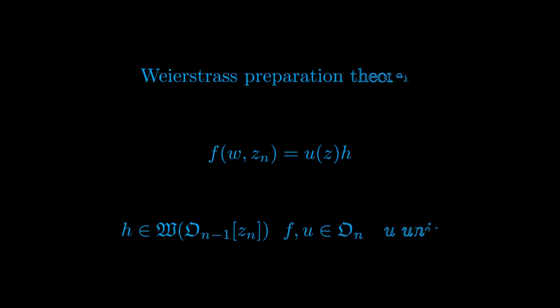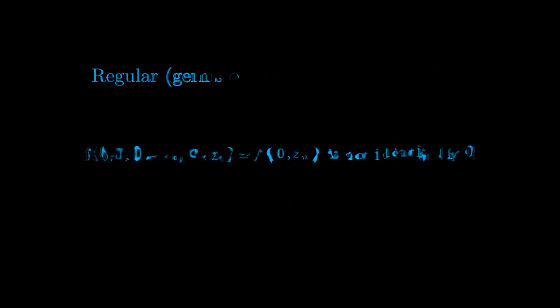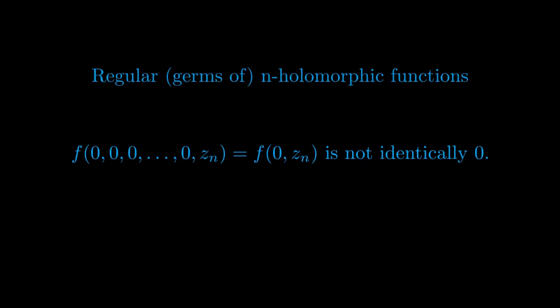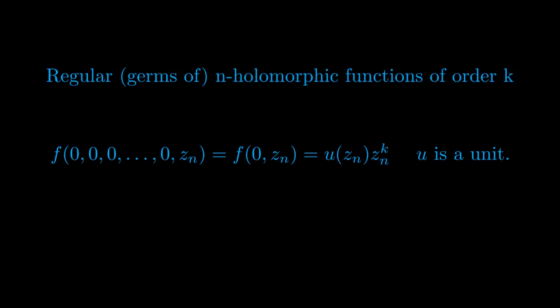We are now ready to state and prove the Weierstrass Preparation Theorem, but first we introduce the following notational convention. We call an n-holomorphic function in a neighborhood of the origin regular in z_n if the holomorphic function in one complex variable f(0,…,0,z_n) — using the shorter notation 0 to signify the origin in C^{n−1} — is not identically 0. If f is regular, we can write it as u(z_n)·z_n^k, where k is the order of vanishing of f at the origin. In this case we say f is regular of order k.